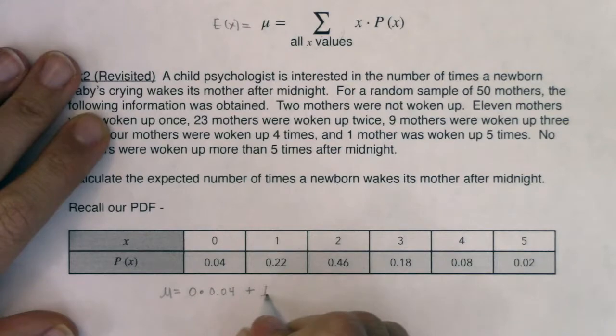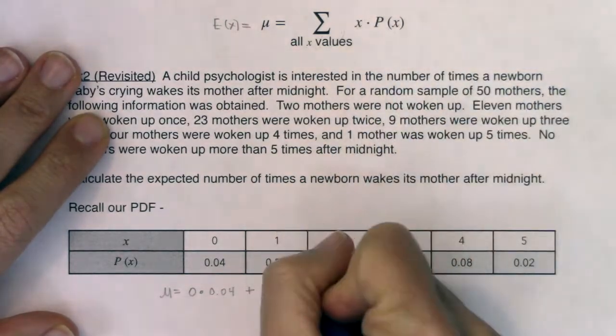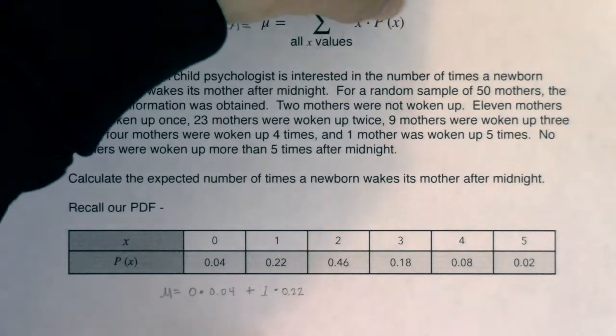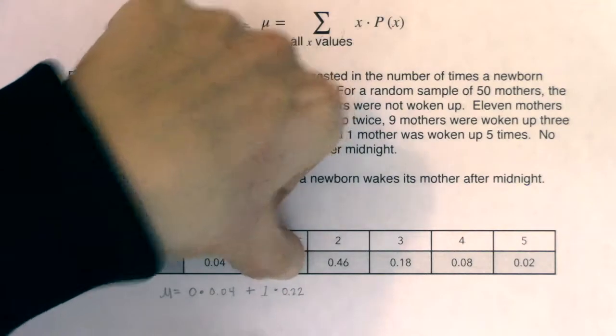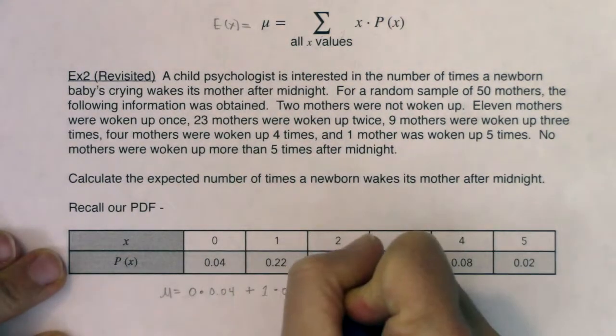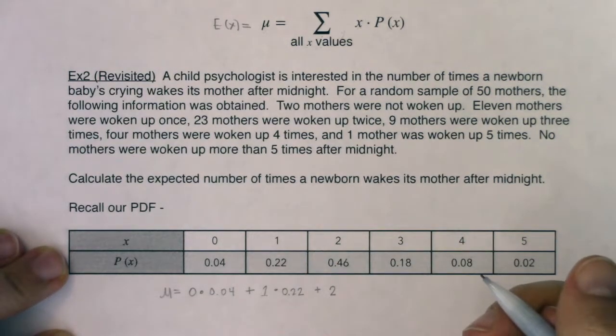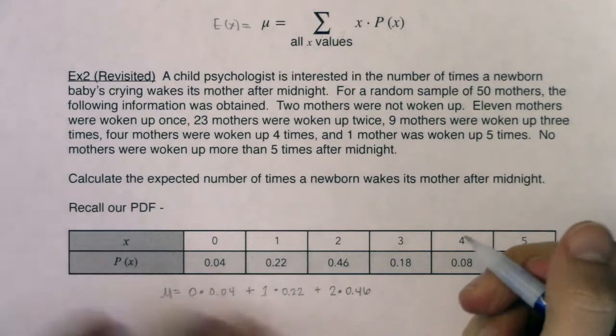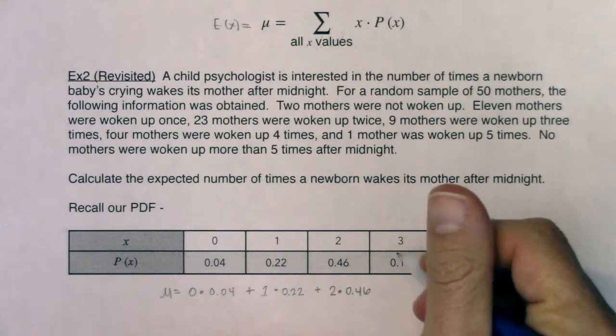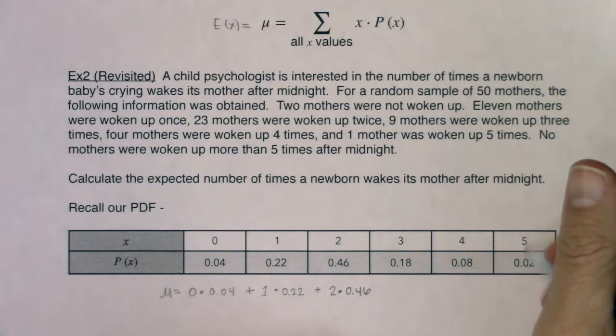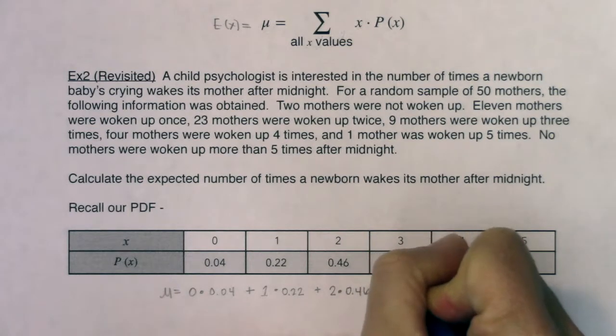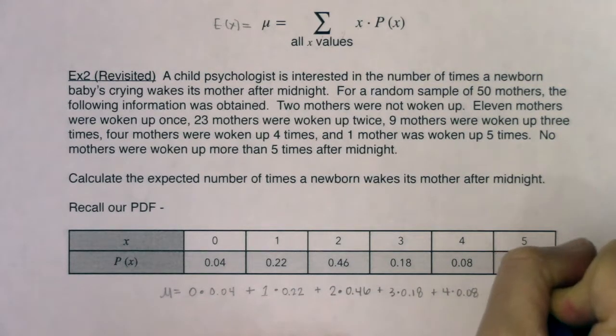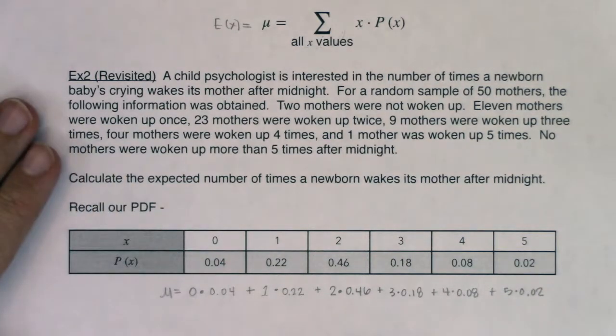Start with your first x value - we're going to go through all x values. We're going to do x value times P(x) value, so there's a bunch of products. Top row of your table, bottom row of your table. My first x value is 0, I'm going to multiply that against its probability of 0.04. I'm going to add my next product - my next x value is 1, multiply that against its probability of 0.22. Then 2 times 0.46, plus 3 times 0.18, plus 4 times 0.08, plus 5 times 0.02.